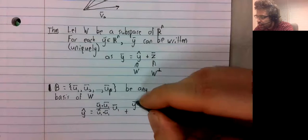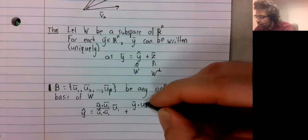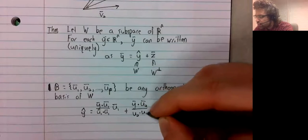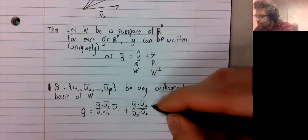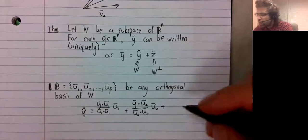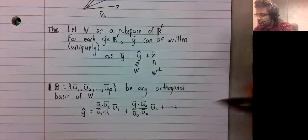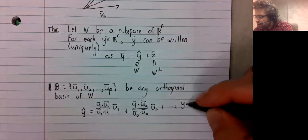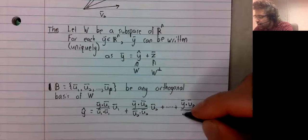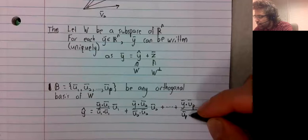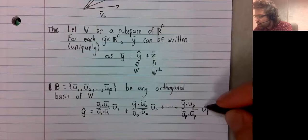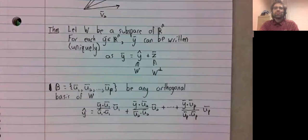And now we project y onto u two, and we project y onto u three. And we keep going until we have projected y onto every one of these orthogonal basis vectors.